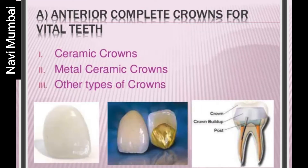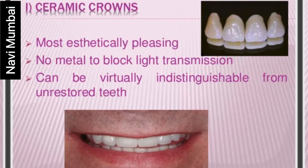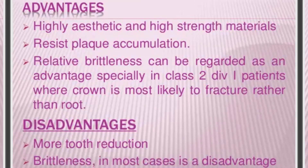For anterior complete crowns for vital teeth: number one is ceramic crowns, number two is metal-ceramic crowns — metal fused to ceramic — and third are other types of crowns. Ceramic crowns are the most widely used crowns in dentistry. They are the most aesthetically pleasing, with no metal to block light transmission and can be virtually indistinguishable from unrestored teeth.